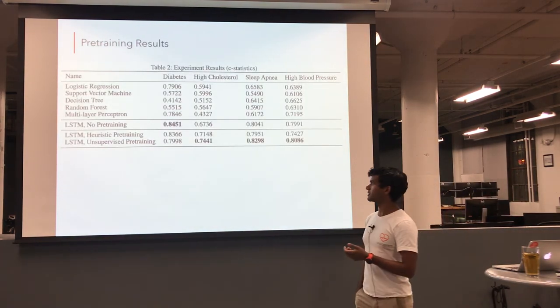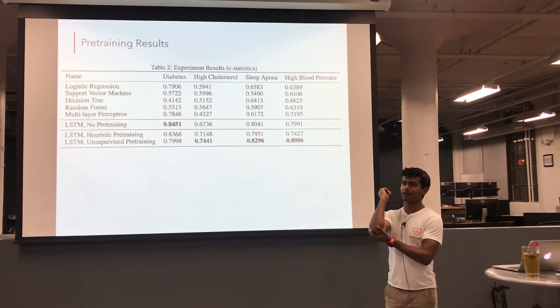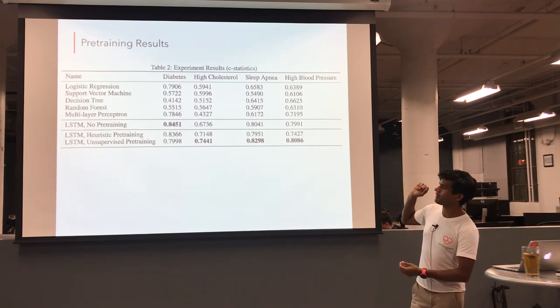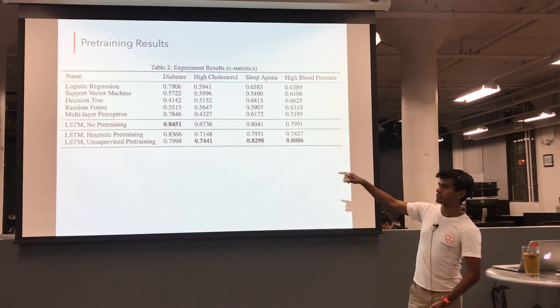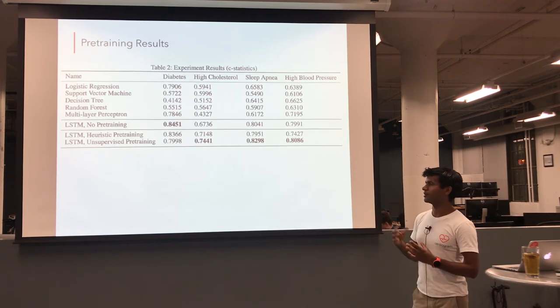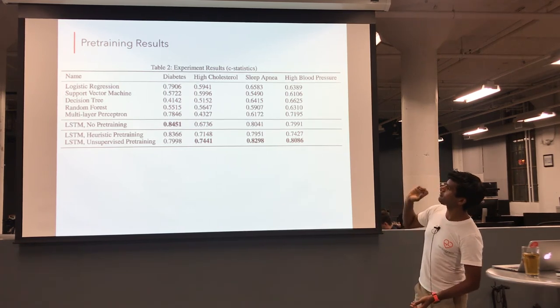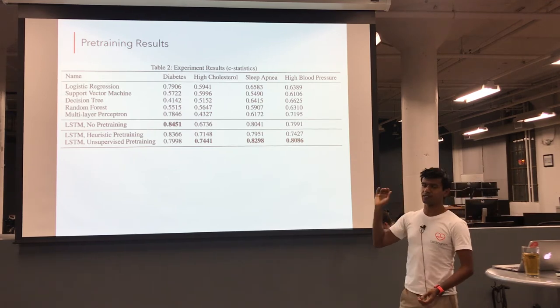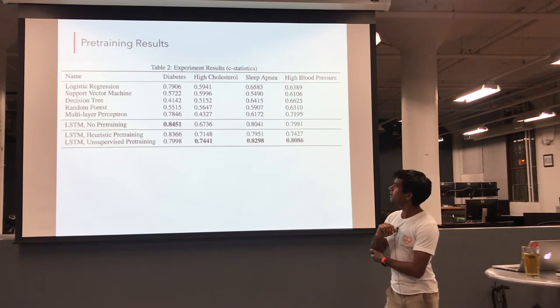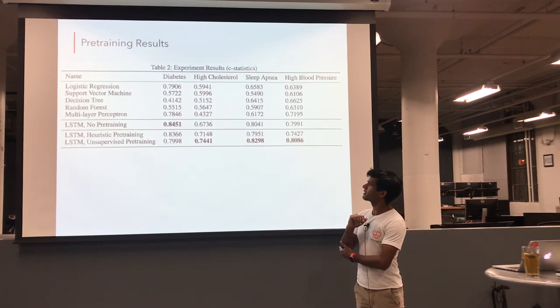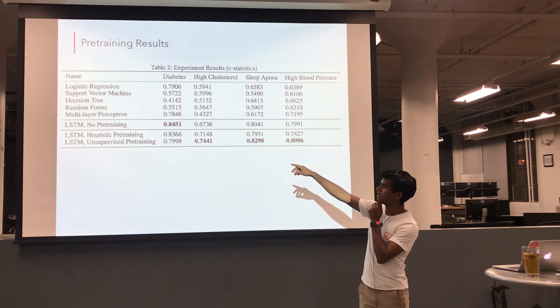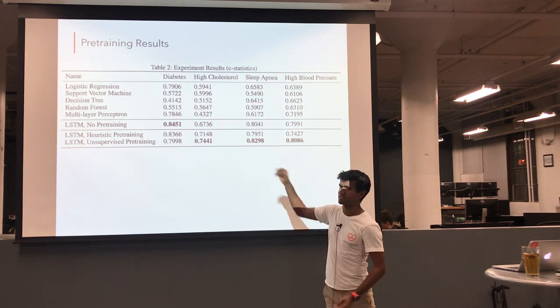We would love to train on a longer period of time, especially for predicting conditions like diabetes. But that's an ongoing challenge right now. Cool. So from these two techniques, I mentioned that we tried these. These are our results that we've submitted as a publication. So basically what we found is that the unsupervised pre-training, the first technique I talked about, works significantly better than no pre-training. For high cholesterol, sleep apnea, high blood pressure, and actually for atrial fibrillation as well. That's not listed on this chart. And the only case where the LSTM with no pre-training works better is diabetes. But it's within a standard deviation of the heuristic pre-training.